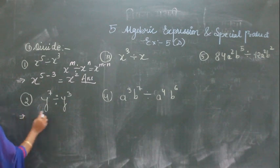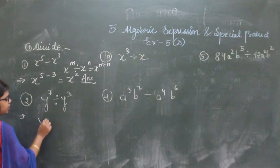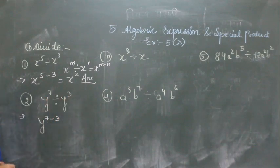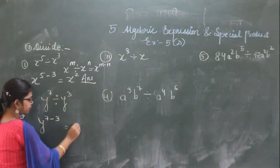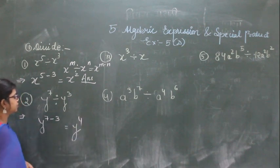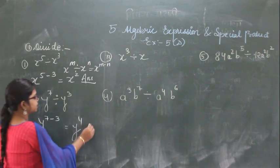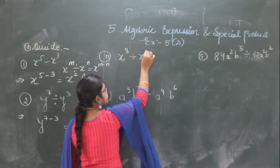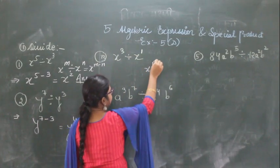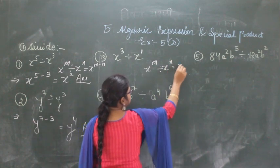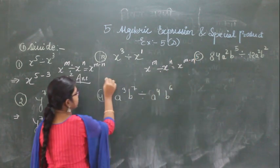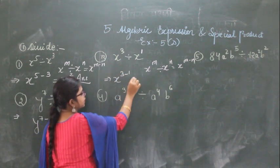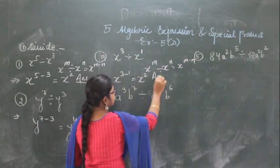For the second question, the bases are also the same and division is used, so apply the same formula. You get y to the power 7 divided by y to the power 3; subtracting the powers gives y to the power 4. For the third question, bases are the same and when no power is written, power 1 is understood. So x to the power 3 divided by x to the power 1 gives x to the power 3 minus 1, which is x to the power 2.